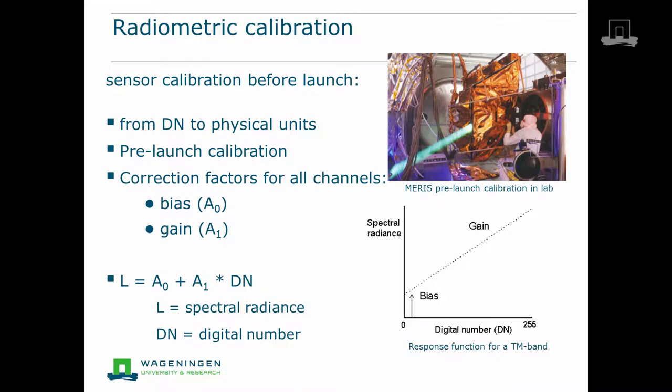The radiometric calibration deals with the radiometric characteristics of a sensor, transforming the measured digital numbers of a pixel into radiances. For most sensors, this is a linear transformation including a so-called bias, A0, and a gain factor, A1. Graphically, this is illustrated in the response function between digital number and radiance, which is different for each spectral band of a sensor. These correction factors are mostly determined in the lab before launch of a satellite and available in the metadata of an image.